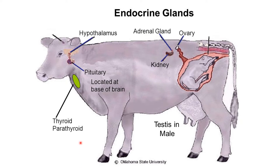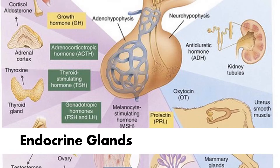These are the major endocrine glands in animals. We have the hypothalamus, the pituitary gland, the thyroid, and the parathyroid. We also have the adrenal gland, the kidney, the ovary, the placenta, and the testes in males. Aside from this, we also have the thymus, the pineal gland, the heart, and the GI tract. The slides to follow will enumerate each gland's location, major hormones produced, and the chemical class of those hormones.